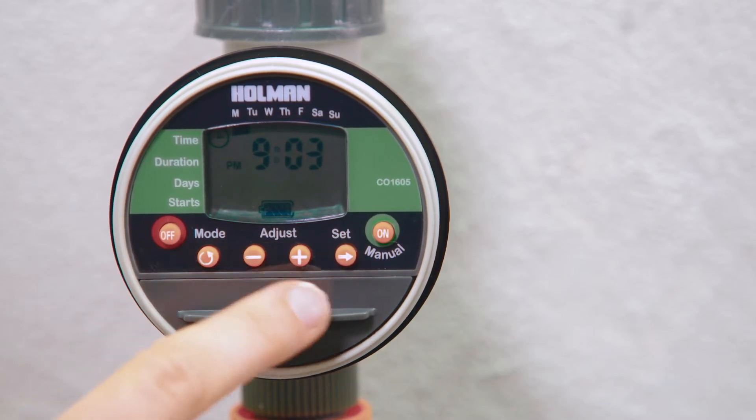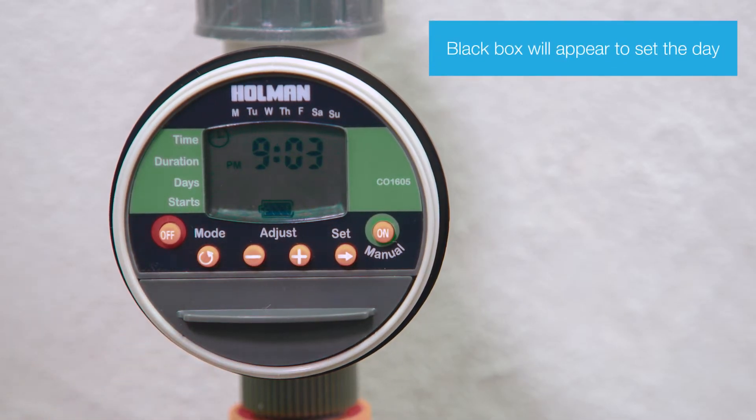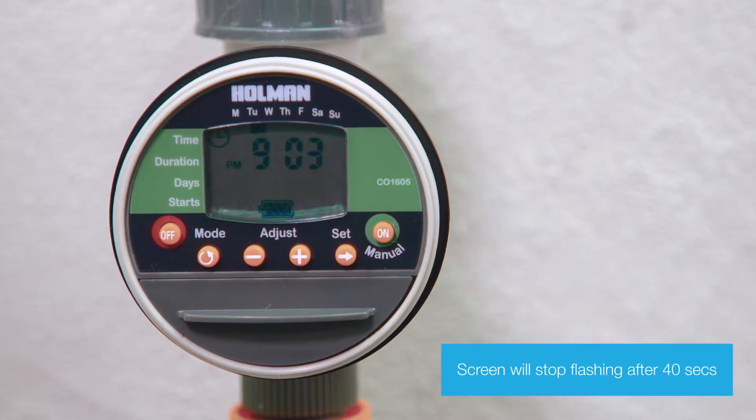Press set to switch to minutes and again for days. Pressing the set button again will confirm the time and day settings. If the screen stops flashing, keep pressing the set button to get back to the hour, minute, or day that you want to change.